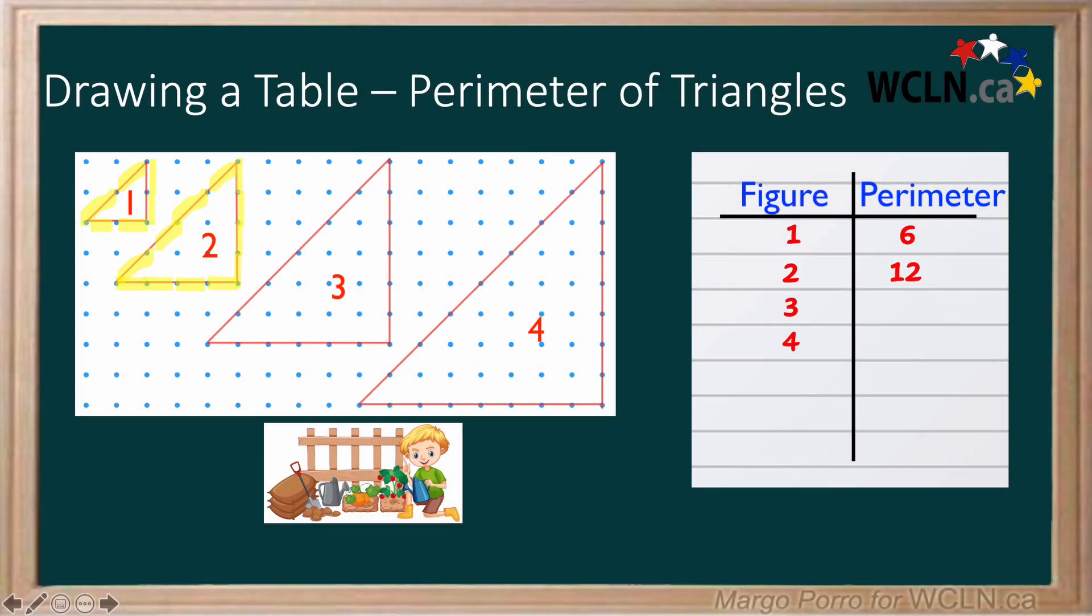The second triangle perimeter is six more than the first. Pause the video and check if this pattern is continued. Do we add six each time? Count the perimeter of triangles three and four to find out.